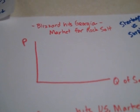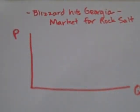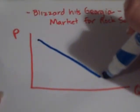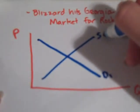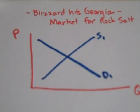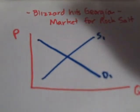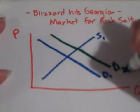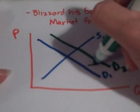Our scenario is: a blizzard hits Georgia — market for rock salt. So we have our original demand curve and our supply curve. Because this happens, we have an increased number of buyers. More people are going to be demanding this because they need it — a blizzard is hitting Georgia, which doesn't normally happen. Or you could talk about tastes and preferences. D2 — it shifts to the right.